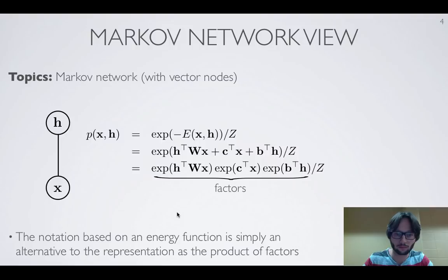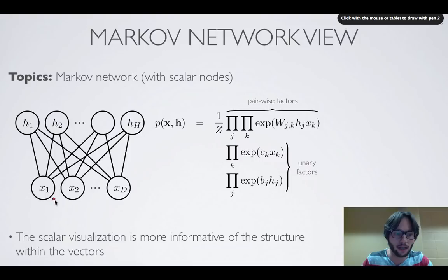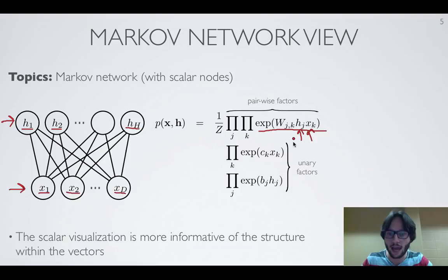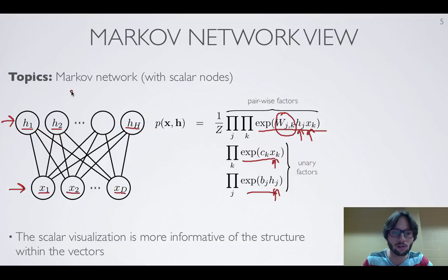A more detailed illustration uses a node for each scalar in the model — each component of x and each component of h. In this case we draw edges between every pair of units in the visible and hidden layers, because we have pairwise factors involving both hj and xk for all j and k, parameterized by entries in matrix W, plus unary factors for x and h individually. Notice there are no interactions between hidden units with each other or visible units with each other — that's why it's called a restricted Boltzmann machine, restricting connectivity to only between the visible and hidden layers.